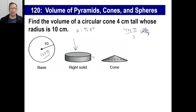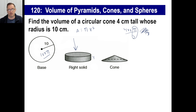Pi is about the same as 3, so you'd go 400 times 3.14 and then divide by 3 to get your answer.